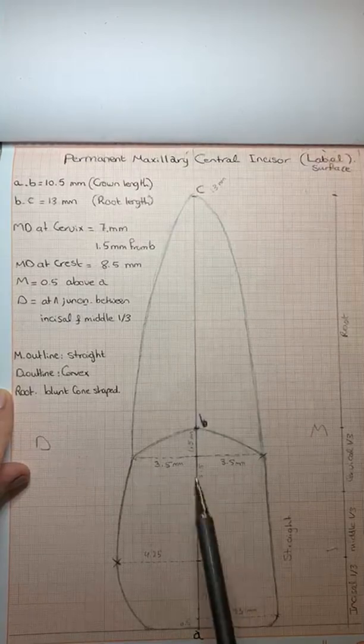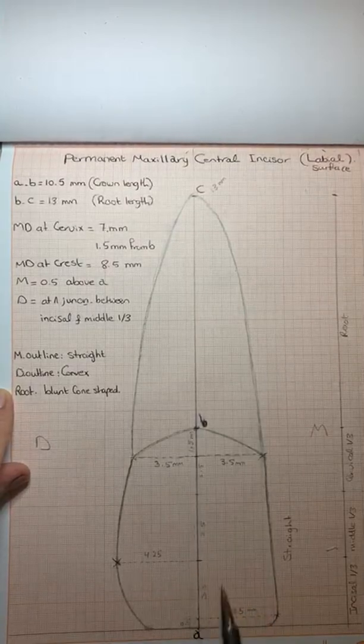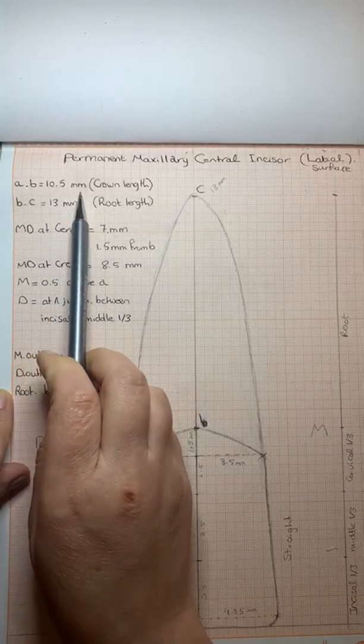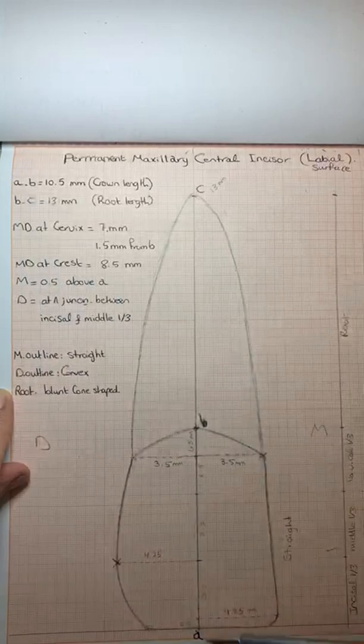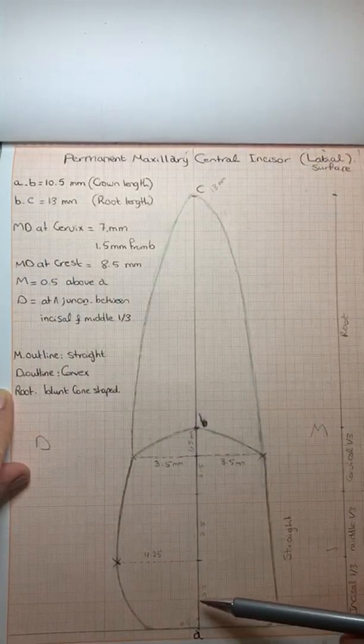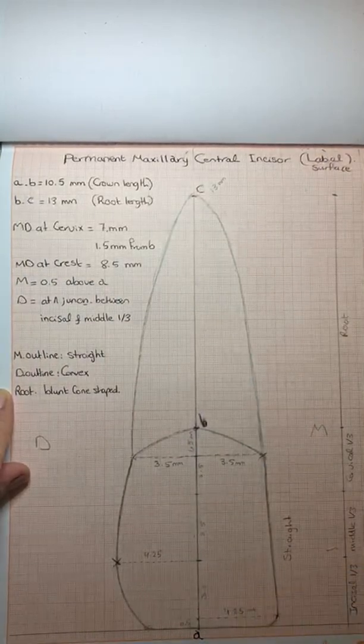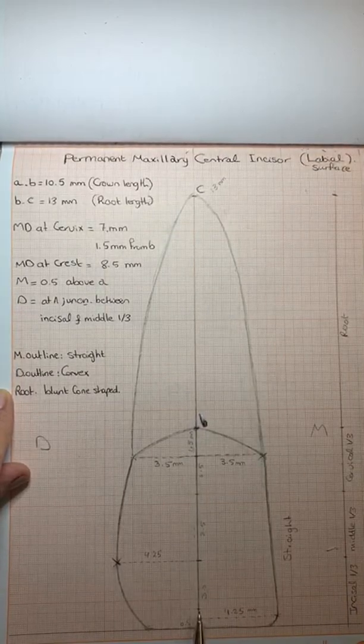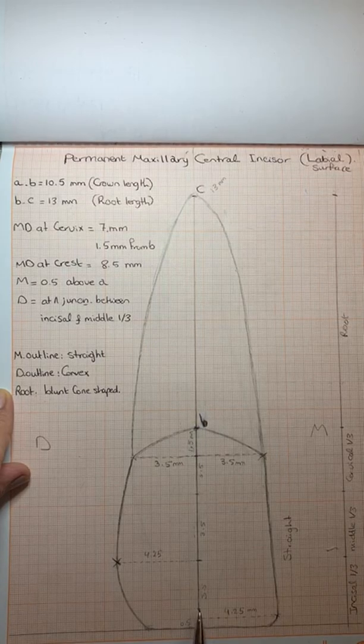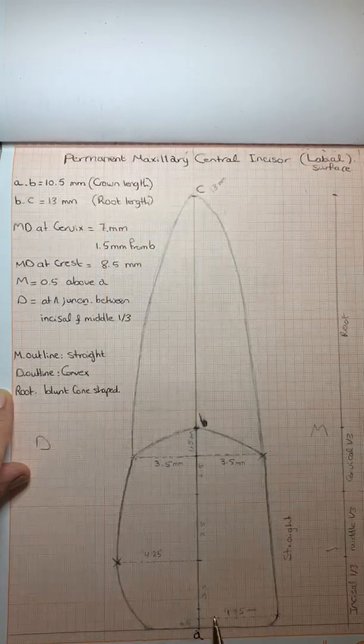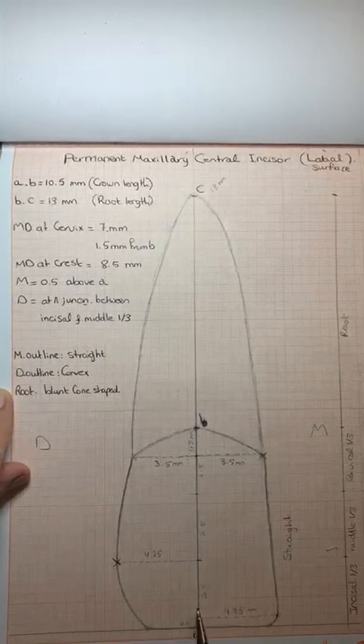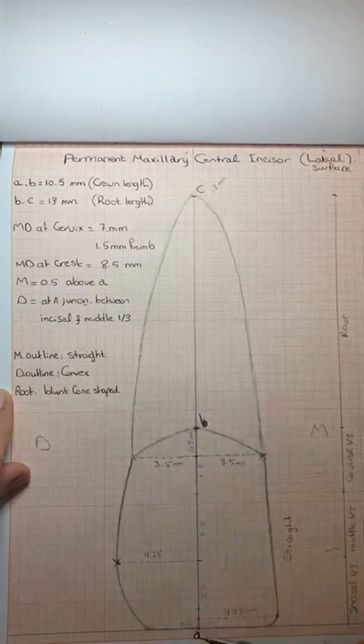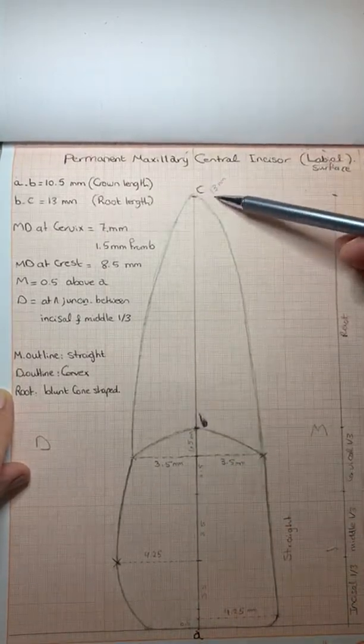The first dimension which represents the crown length from A to B. From A to B, it is 10.5 millimeters, which represents the crown length. We will see all four small squares, one millimeter, because we have a drawing larger than the wax pattern or wax block. From B to C, 13 millimeters, which represents the root length.